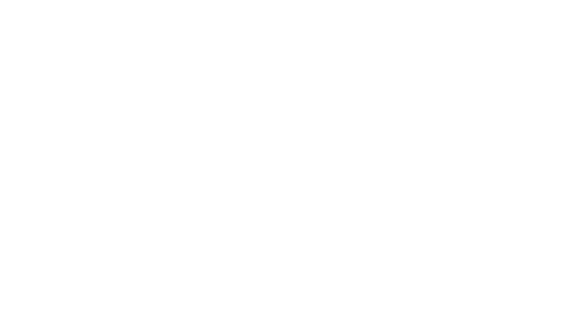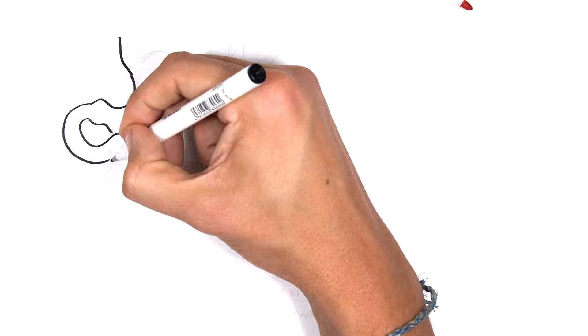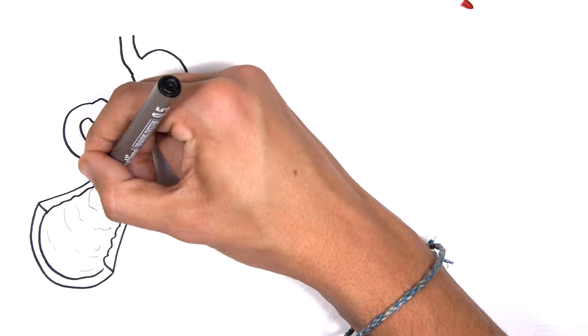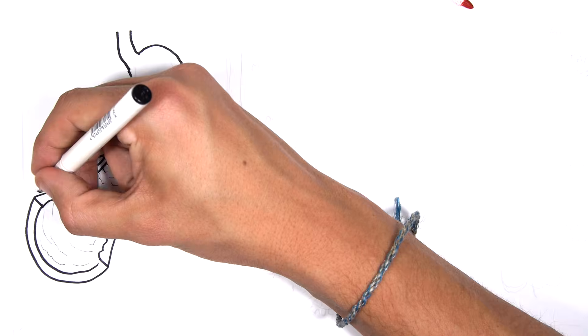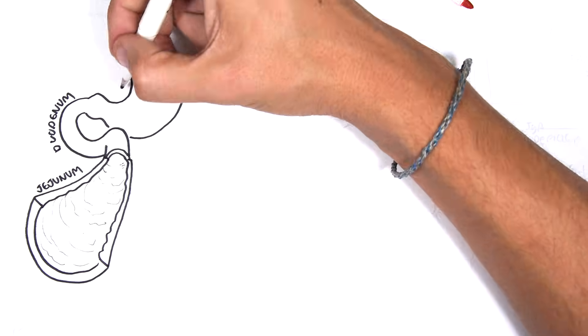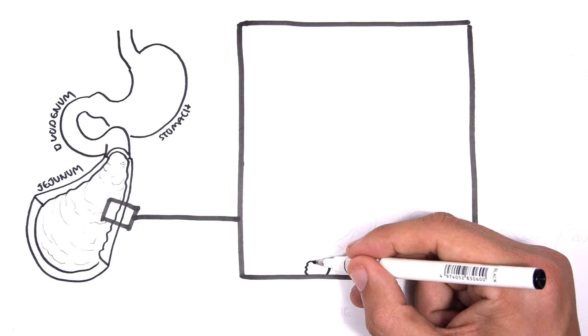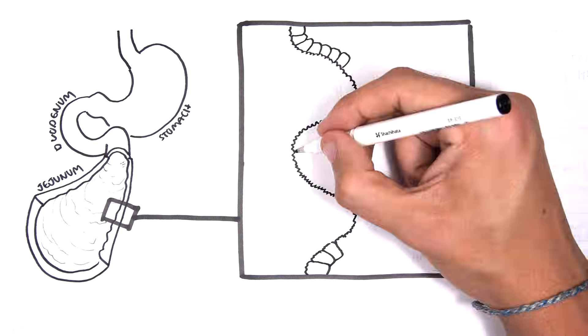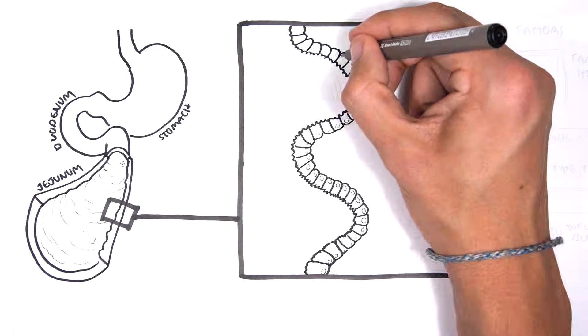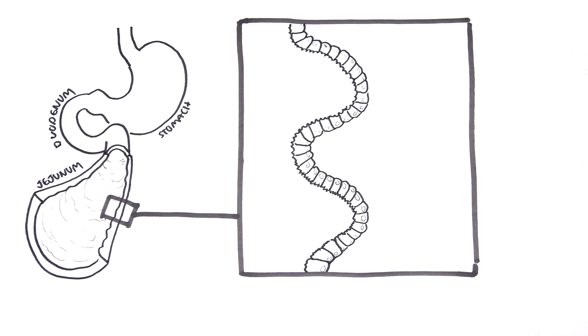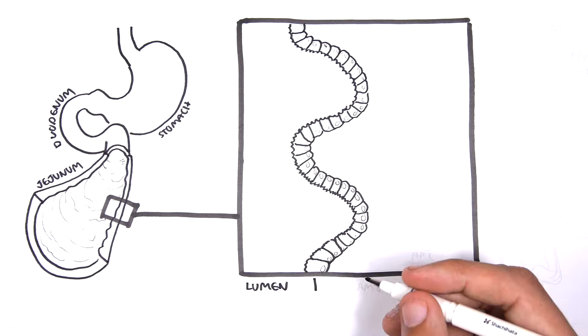Now let us talk about the pathophysiology, the mechanism of disease of celiac disease. So here is the jejunum, the duodenum, and the stomach. We are looking at the lumen of the jejunum and the cells here. Here is a zoomed in view of the area, the lumen where food will pass through.